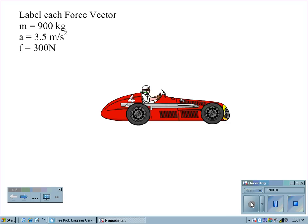If we were given a 900-kilogram car accelerating at 3.5 meters per second squared against a friction force of 300 newtons, and we were asked to find the four force vectors acting on this car,